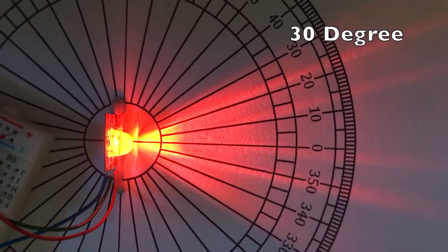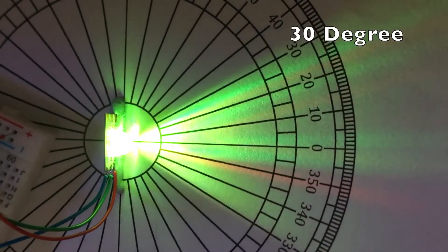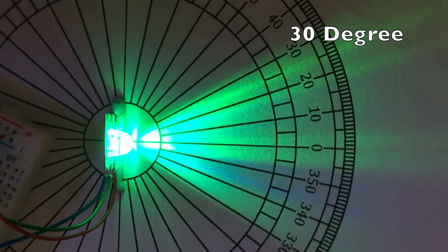So we've got the 30 degree lens that cycles through all of the colors there. Hopefully you can see it creating quite a nice tight beam.